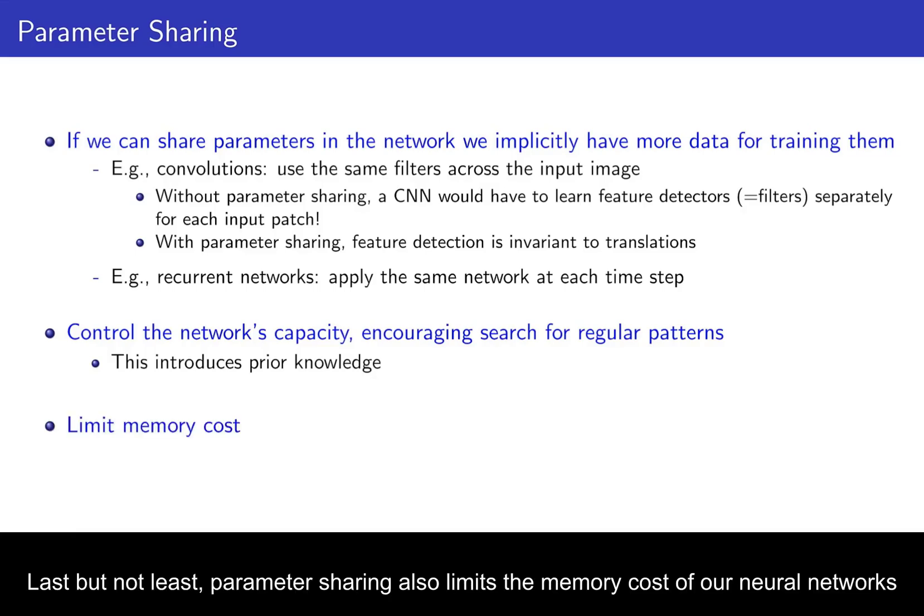Last but not least, parameter sharing also limits the memory cost of our neural networks, because even if we use a particular weight thousands of times in the neural network, we only have to save it once. So in particular, if we save the model to disk, we only need to save one copy of this, and we know implicitly where to use this in the network.